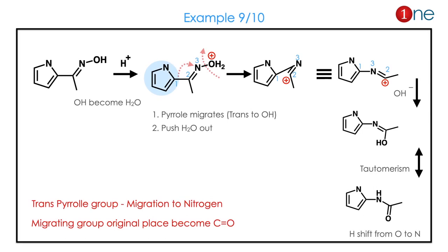In the next example, like any other aromatic system, even pyrrole can migrate. Here the oxime has pyrrole as the trans group, which migrates, and the final product is the amide. The fact here is that even bulkier aromatic groups can migrate in Beckmann rearrangement.